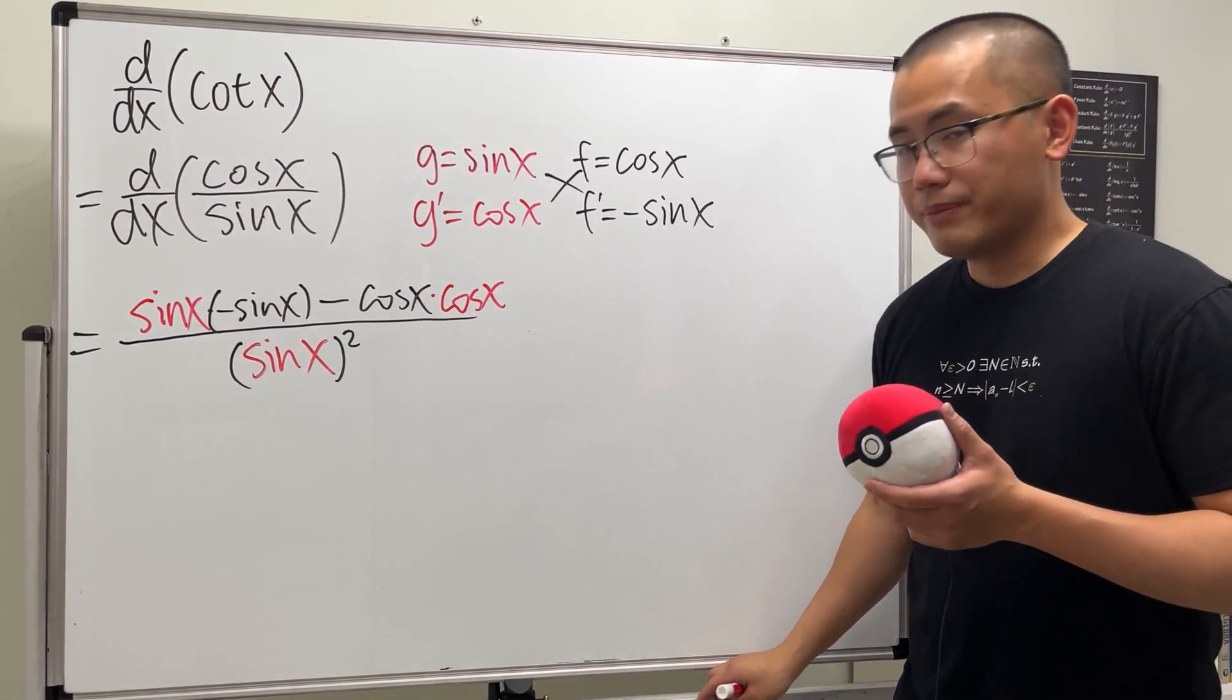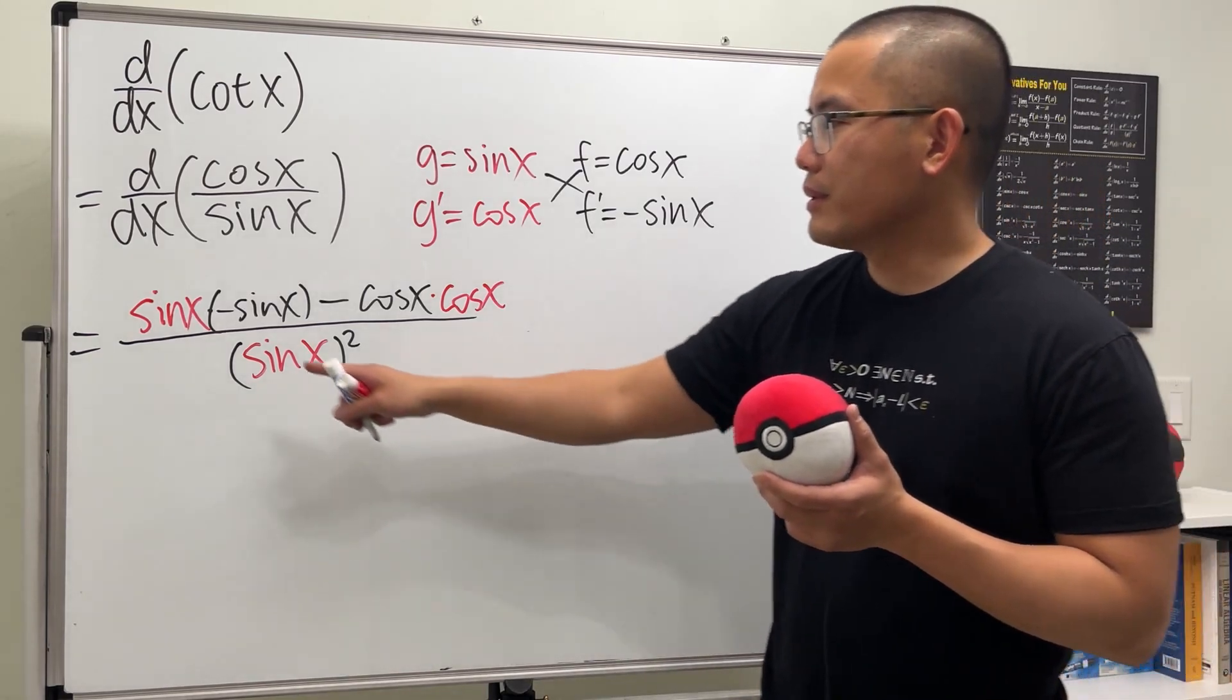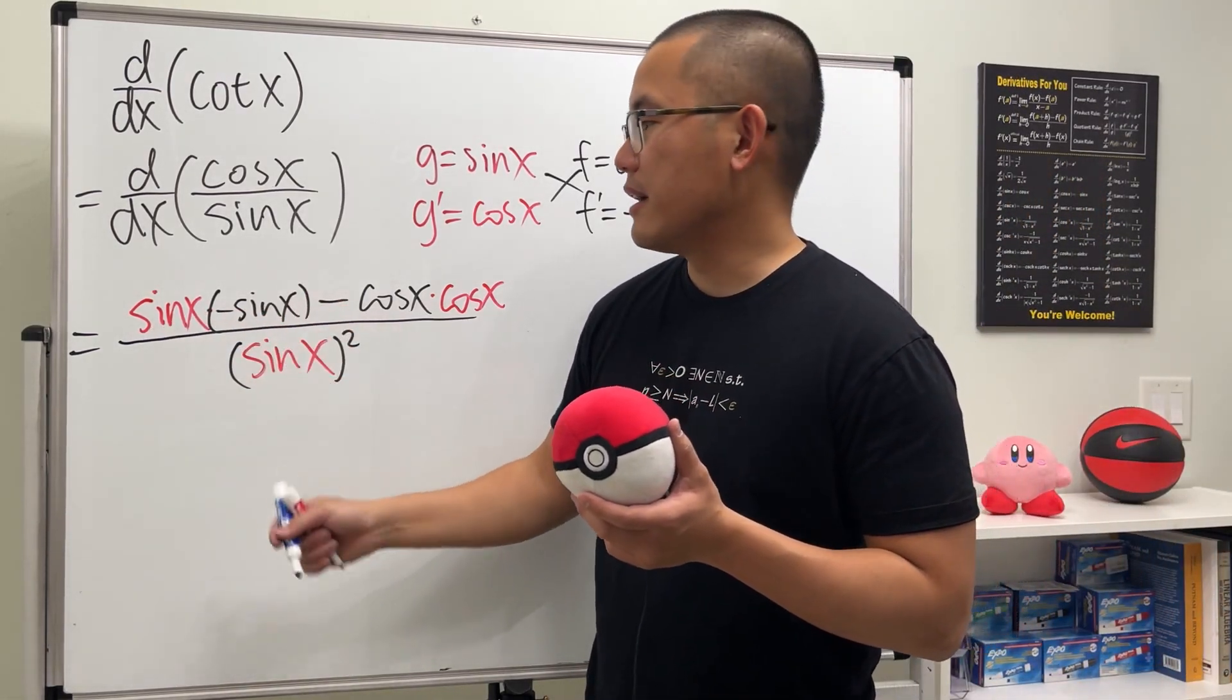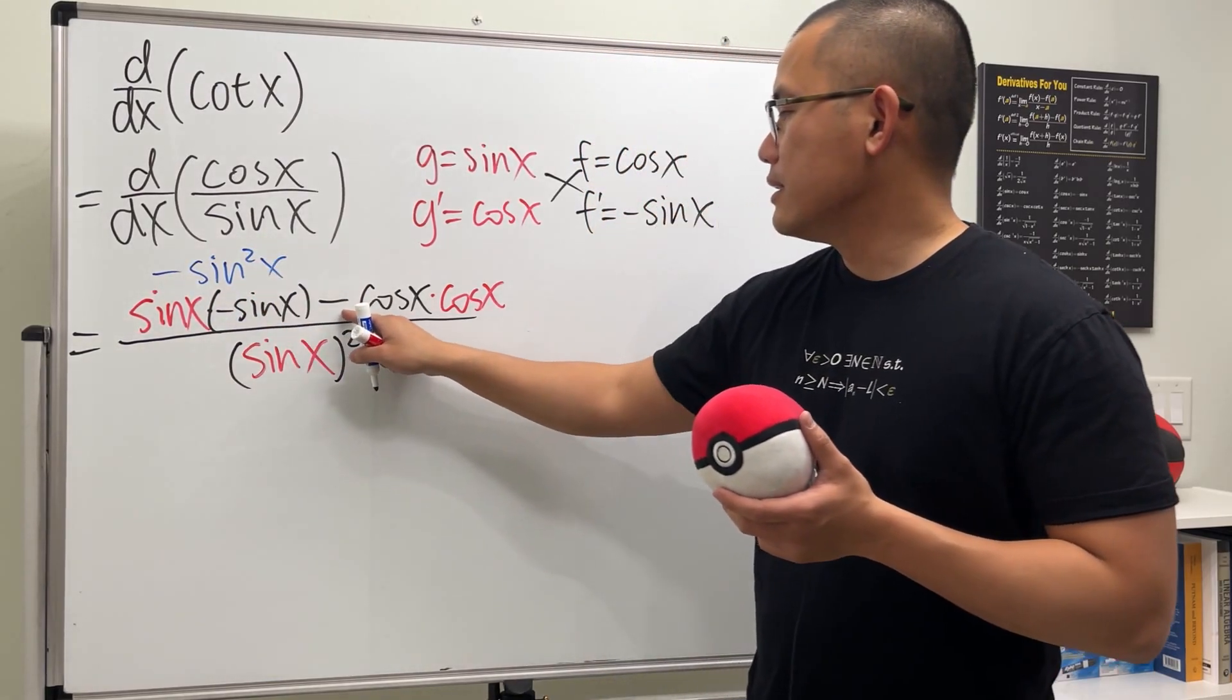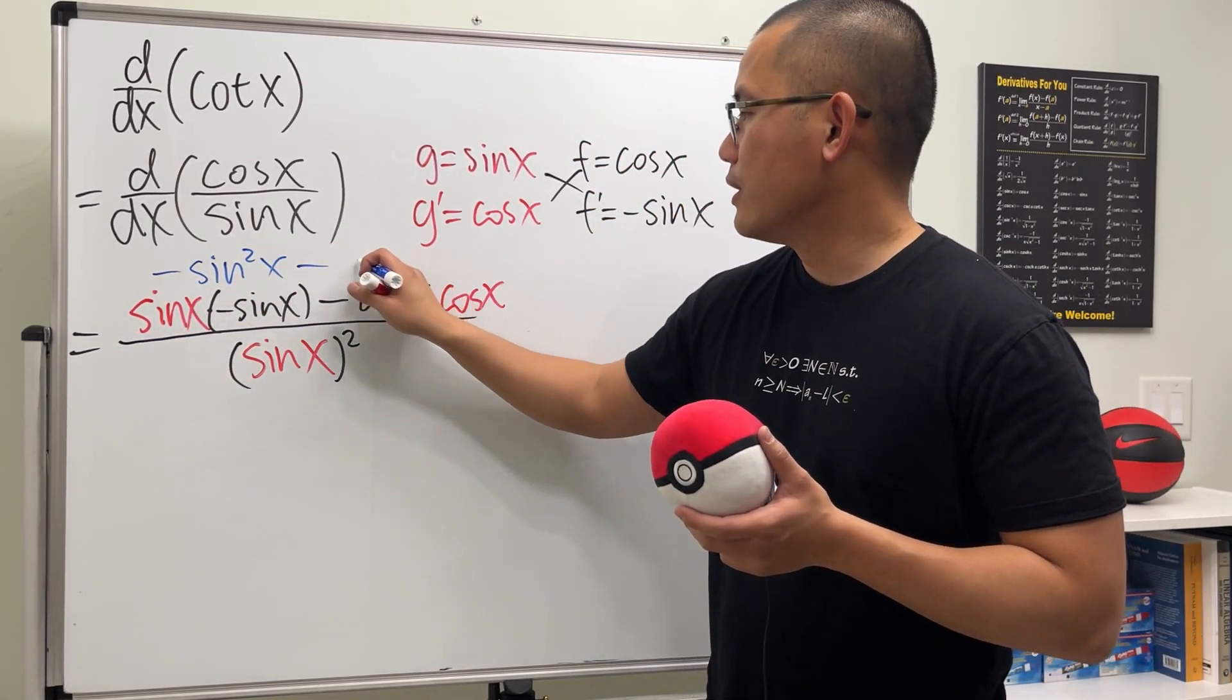And now is there anything that we can do? Yes. Have a look. Of course, sinx times sinx, that's negative sinx squared. So let me just write that down. And then this is negative. And then we have cosx.